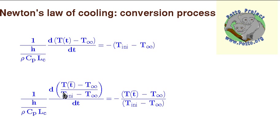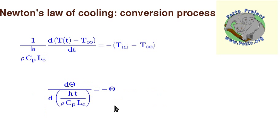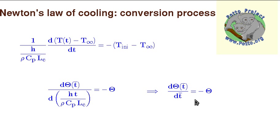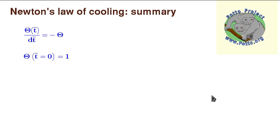We notice that this gives exactly the definition of the dimensionless temperature, both as a derivative and as a function. We also insert the characteristic time into the derivative, and the dimensionless time appears. We arrive at a very simple equation where the derivative of the dimensionless temperature equals the negative of the dimensionless temperature, and the initial boundary condition in dimensionless form is equal to 1.